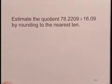This exercise involves rounding. We're going to estimate the quotient 78.2209 divided by 16.09 by rounding to the nearest 10.